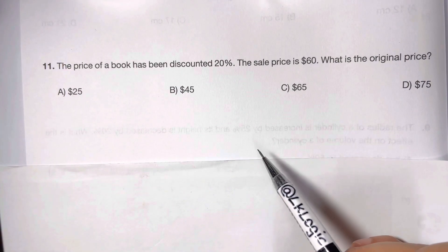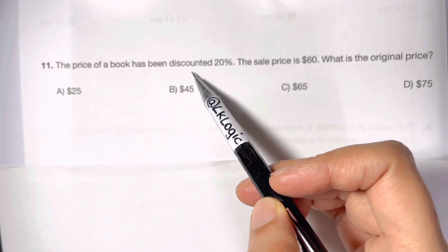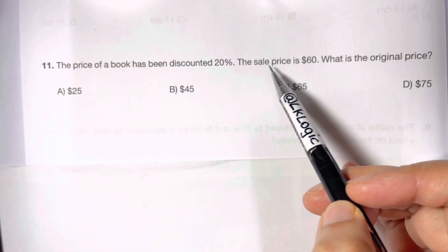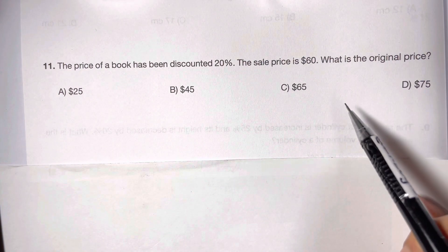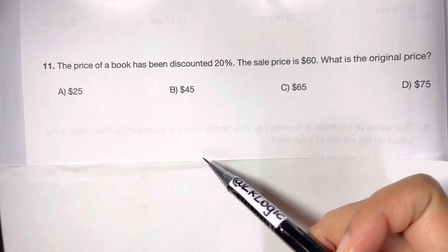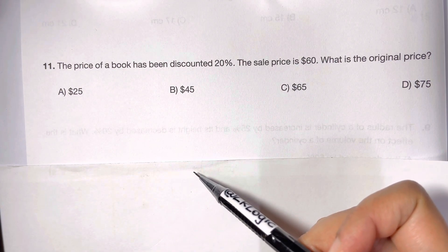Hi everyone, this is an amazing math olympiad question. The price of a book has been discounted 20%. The sale price is $60. What is the original price? So what do you think, how can we do this question when you know the sale price and you don't know the original price?